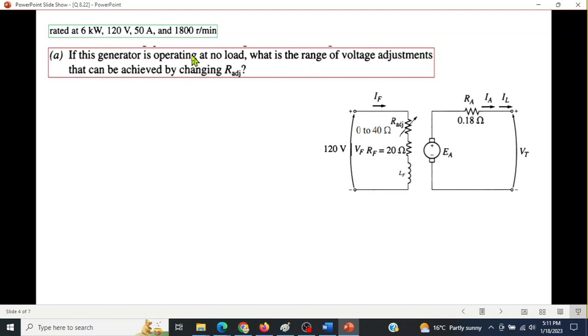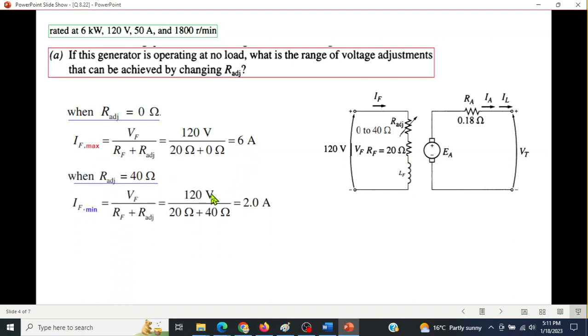So the first case, generator is operating at no load. What is the range of the voltage adjustments that can be achieved by changing R adjustment? So first we will take the lower range. So when R adjustment is 0, we get IF maximum, and that is 6 ampere. And when R adjustment is maximum, that is 40, then IF will be minimum, and its value is 2 ampere.